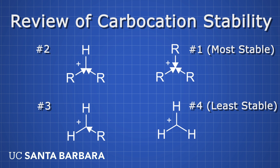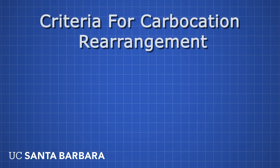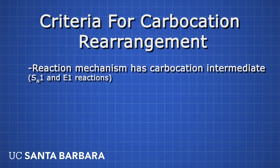Now that we've reviewed the basics of carbocation stability, we can get on to the pertinent topic of how these shifts occur and predicting when they will occur. There are two basic criteria in determining whether a carbocation rearrangement will occur. Firstly, the reaction mechanism must have a carbocation intermediate. This is true of nearly all SN1 and E1 reaction mechanisms. If you don't know what that terminology means yet, don't worry — you'll cover it later in your organic chemistry career. The point is, if your reaction mechanism has an intermediate where there is a carbocation, a rearrangement could possibly occur.